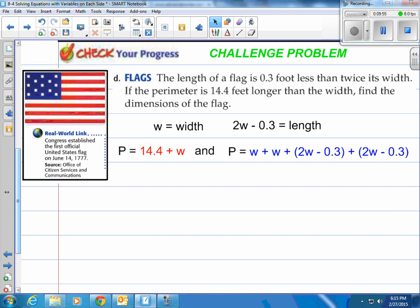That equals perimeter as well. So if these two things both equal the perimeter, the red and the blue, and the perimeter is one particular number, can't we set them equal to each other? Yes, we can. So 14.4 plus W has got to be equal to W plus W plus the two widths or the two lengths there, 2W minus .3 and 2W minus .3.